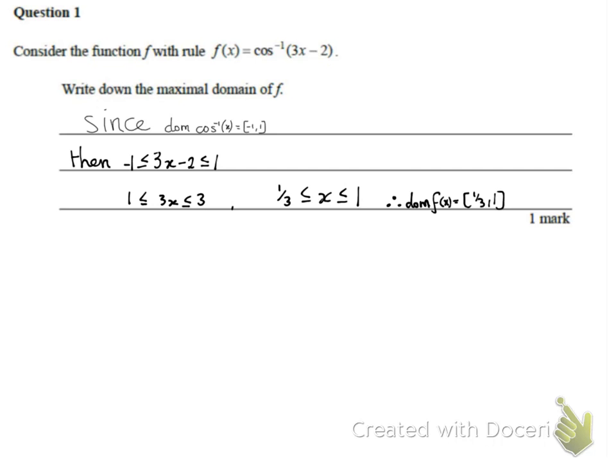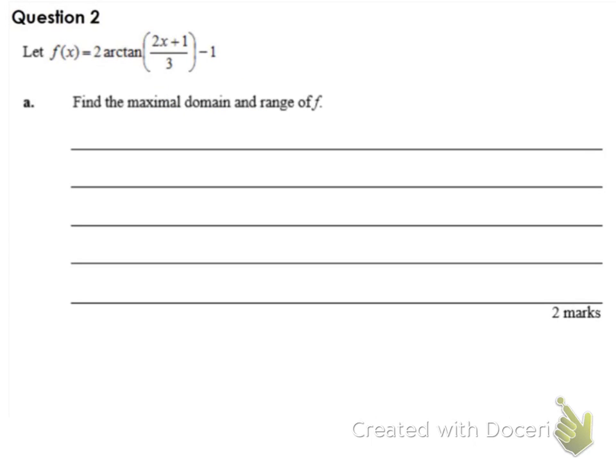The next question to work on: Question two. Let the function f(x) equal 2 arctan of (2x + 1) all over 3, subtract 1. You have to find the maximal domain and range of this function.